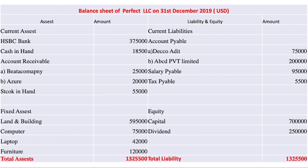Let us briefly discuss each component of Perfect LLC's balance sheet. The first asset is HSBC Bank — this is the bank balance amount as on 31st December 2019. Next is cash in hand. Then accounts receivable (AR), which is the balance of money from customers for selling goods or services. Next is stock in hand — the total stock value as on 31st December 2019. Then fixed assets, also known as tangible assets — property that cannot easily be converted into cash — including land and building, computer and laptop, and furniture.